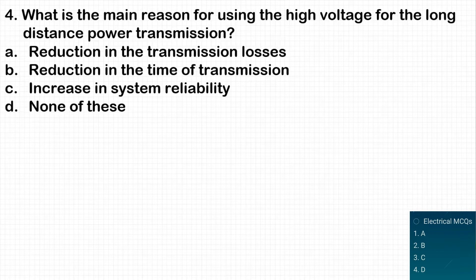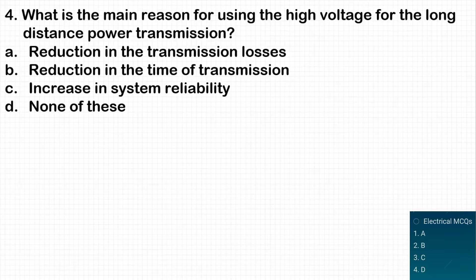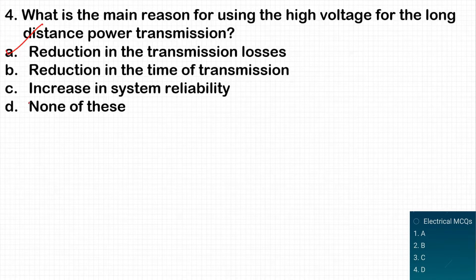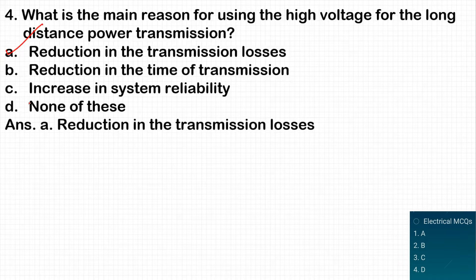The next question: what is the main reason for using high voltage for long distance power transmission? The main reason is the reduction in transmission losses. When we transmit at high voltage levels — 11 kV, 220 kV, or 765 kV — the current through the conductor becomes very low, so transmission losses are lower. Option A is the correct answer.